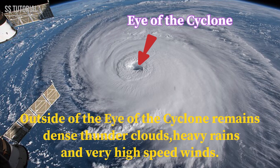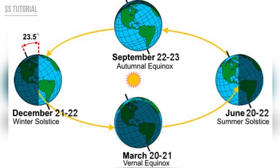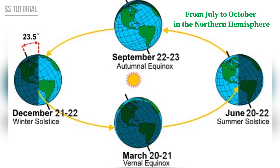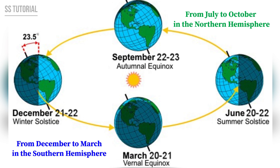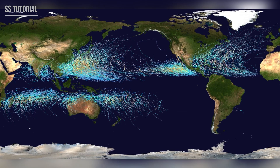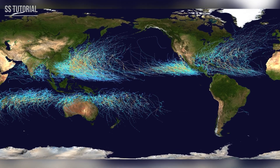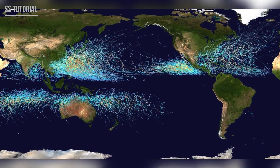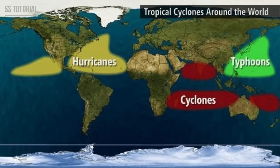Outside the eye of the cyclone there is dense cloud, heavy rain, and the strongest winds. Tropical cyclones originate mostly in the summer season — from July to October in the northern hemisphere and from December to March in the southern hemisphere.